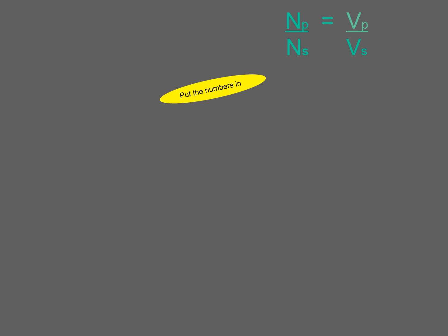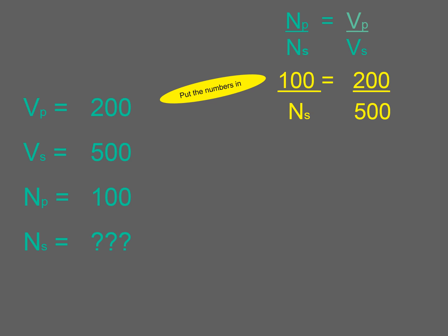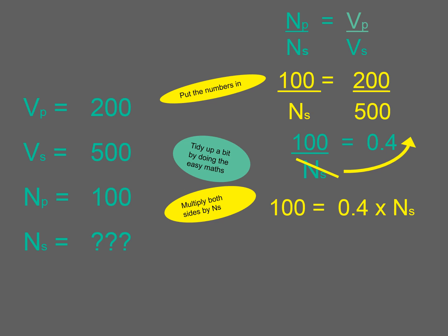Here's another one. Same idea. Here's the numbers we're using. Let's put them in. Make it look tidy. Multiply both sides by NS. Get rid of the 0.4. Get it well away from the NS. The NS is the subject. There we go. 250.